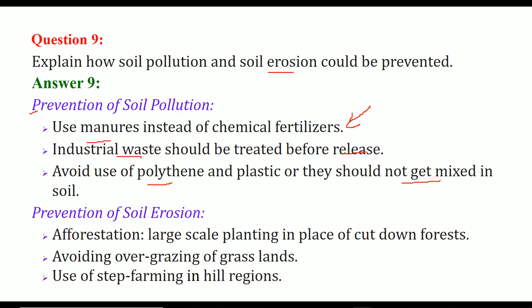Prevention of soil erosion how we can do that. The first is we need to grow plants, that is we have to cut down the amount of large scale forest cutting. We have to avoid overgrazing of grassland, only the areas which have that amount of grass needs to be fed to the animals and use of step farming in hill region. This would be very beneficial.